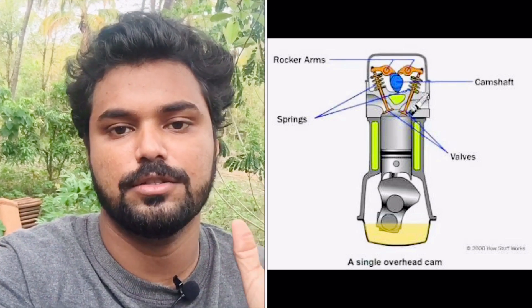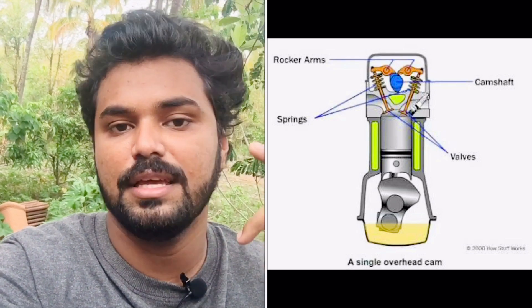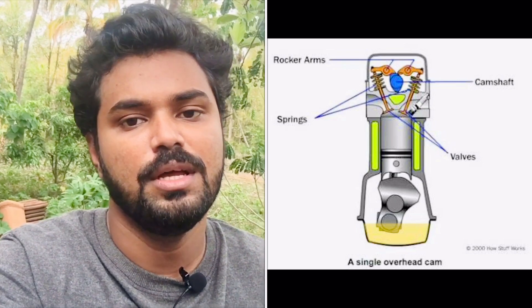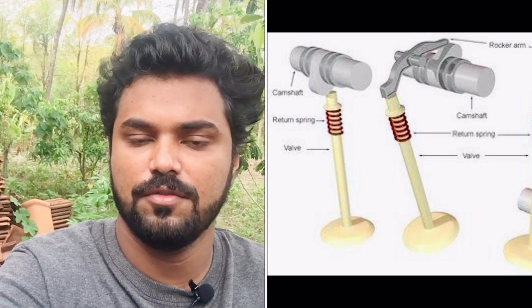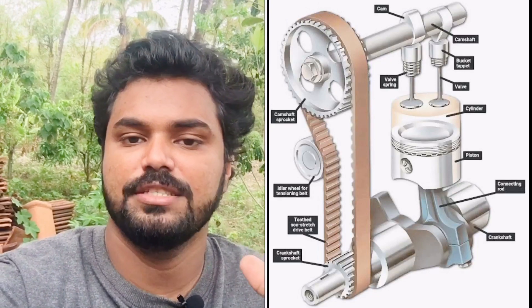There is one intake valve and one exhaust valve. The exhaust valve is the inlet. There are two intake valves and two exhaust valves — this is called a 4-valve engine. This valve system uses a camshaft, and it is called SOHC.